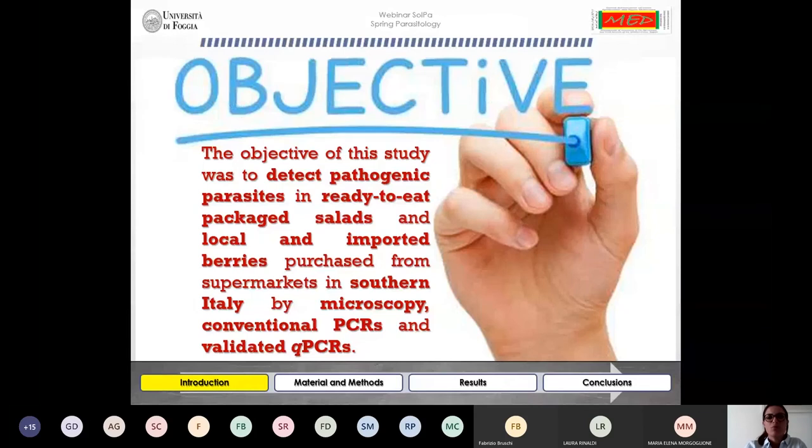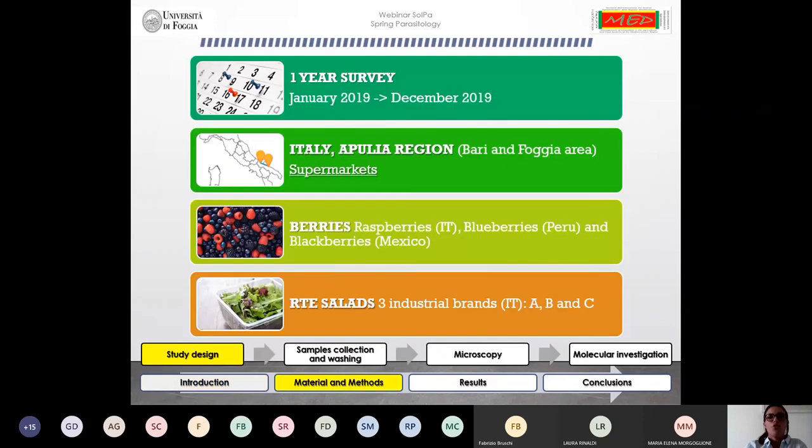Therefore, the aim of our study was to detect pathogenic parasites in ready-to-eat packaged salads and local and imported berries purchased from supermarkets located in southern Italy by microscopy, conventional PCR, and validated qPCRs.